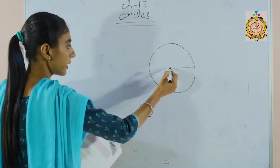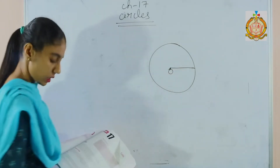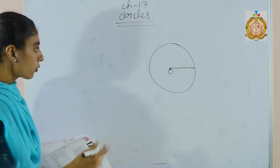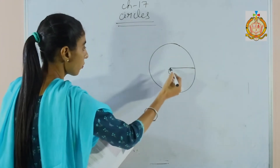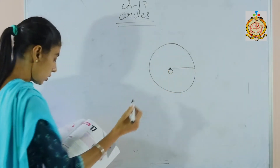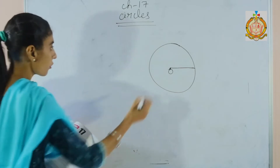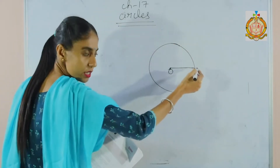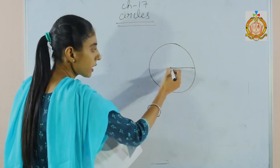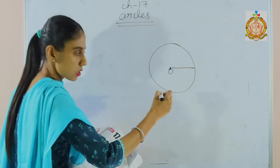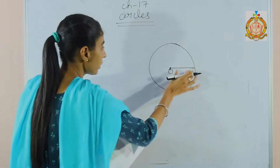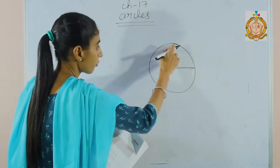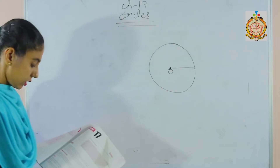What is the center? The center of a circle is the point which is equidistant from all points on the circumference of the circle. This is the circumference of the circle and this is the center. Their distance from the center, from any side, is equal.